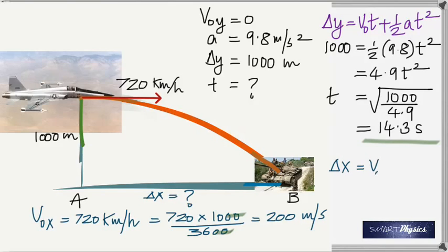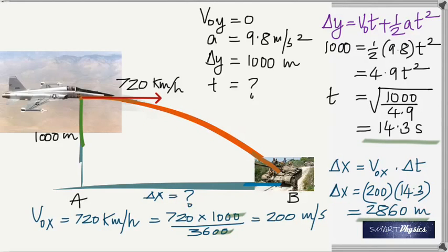Then to find delta x, multiply that with the time. Remember, this equation can only be used when the velocity is constant, and in this particular case the horizontal velocity is constant. So you see that the answer is 2860 meters.